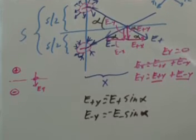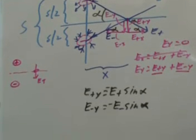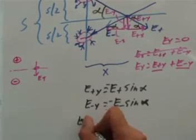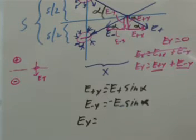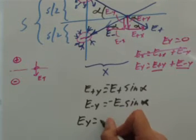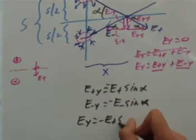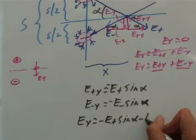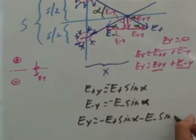Bringing everything together, the total Y-electric field E_y is going to be minus E-plus times sine of alpha, minus E-minus times sine of alpha.